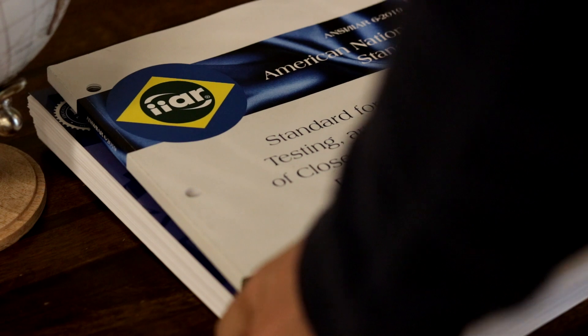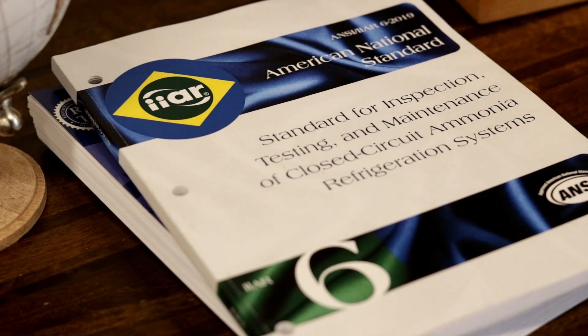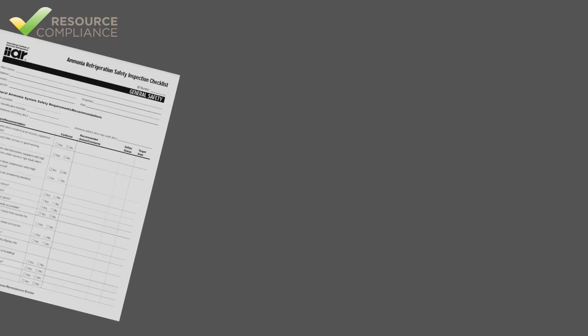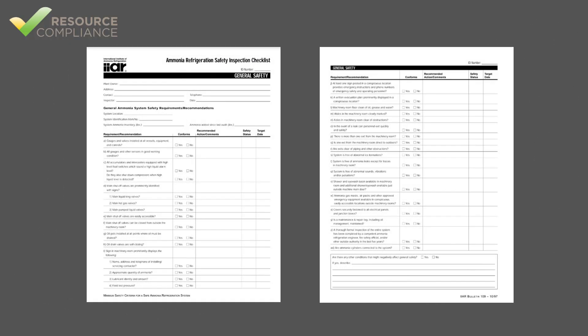The checklists contained in IIAR 6 Appendix B are derived from a legacy document named IIAR Bulletin 109. For years, the Bulletin 109 checklists, or B109s, served as the gold standard for documenting annual mechanical integrity inspections for ammonia refrigeration equipment.